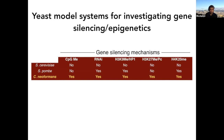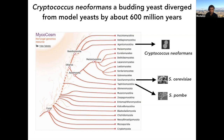Cryptococcus neoformans is a budding yeast that has diverged from model yeast by about 600 million years. On this phylogenetic tree of fungal evolution, the major phyla are the Ascomycota and the Basidiomycota. The Ascomycota include the model organisms S. cerevisiae and S. pombe. Over in the Basidiomycota, the subphylum Agaricomycotina includes all the mushrooms — every mushroom you've ever eaten is part of this subphylum — and Cryptococcus neoformans is a budding yeast that's part of that group.